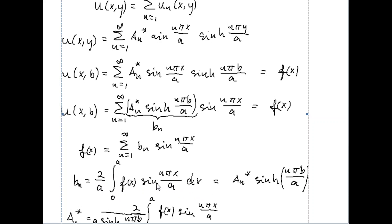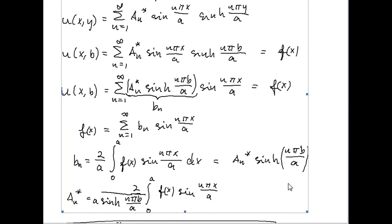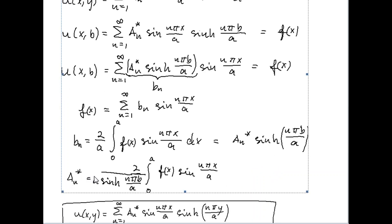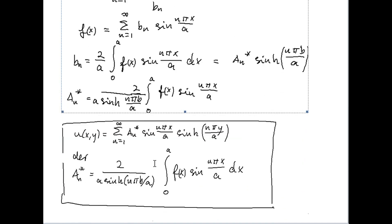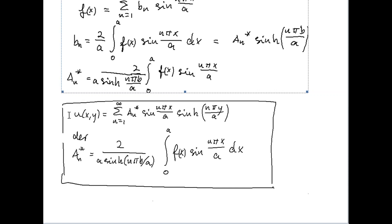And we know that b_n is equal to this, so this is written here. And then we can just divide by sinh, and we get this expression for the coefficient a_n star. So summing up, we find that the solution u is written as an infinite series in this way, where the coefficients a_n star is given by this integral.